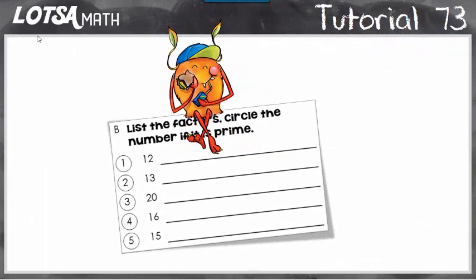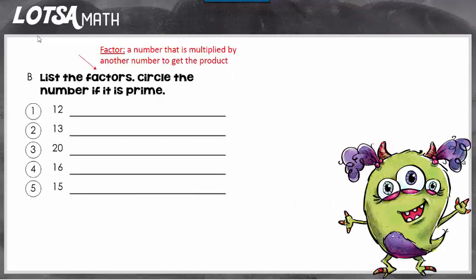For these questions, you're going to list the factors and then circle the number if it's prime. A factor is a number that's multiplied by another number to get the product. A prime number is a number that only has two factors: one and the number itself.